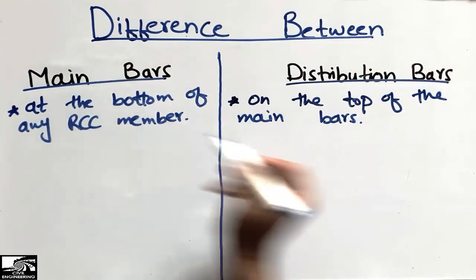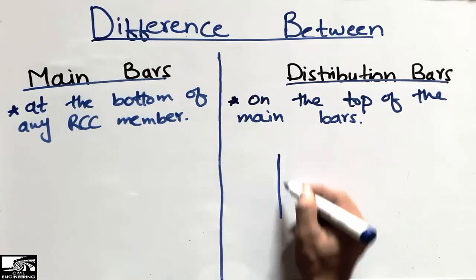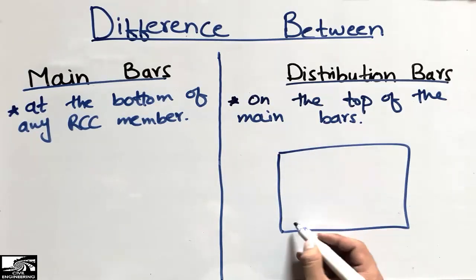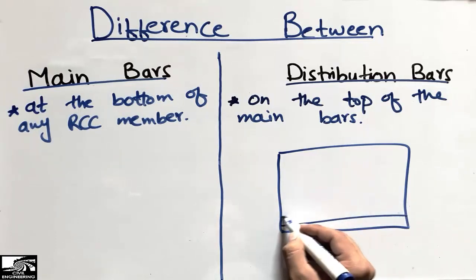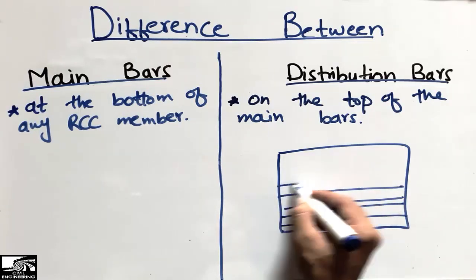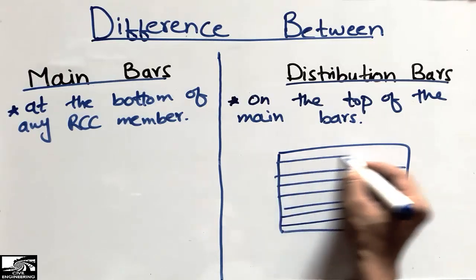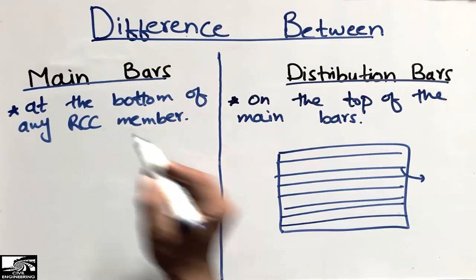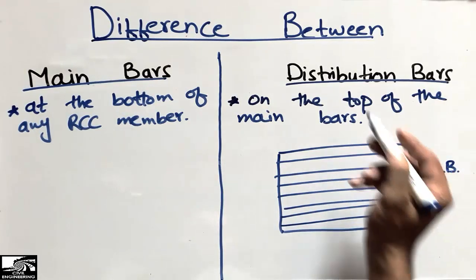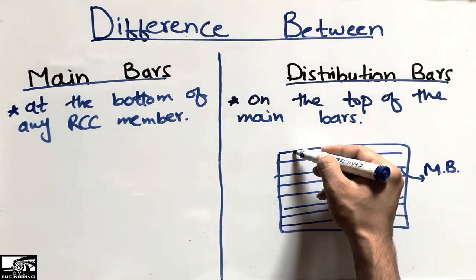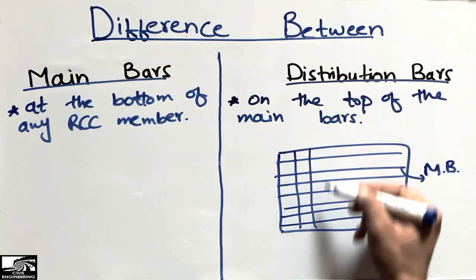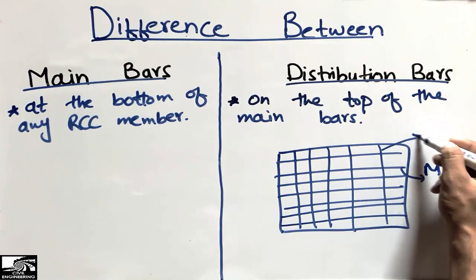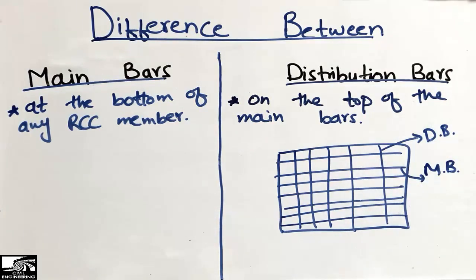For example, I will show it here. This is a footing — maybe an isolated footing or a spread footing. The main bars are provided at the bottom of this structural member, at the very bottom. We call these the main bars. The distribution bars are those which are placed on top of the main bars, and we call this type the distribution bars. This is one of the main differences between these two types.